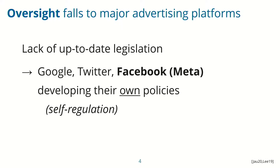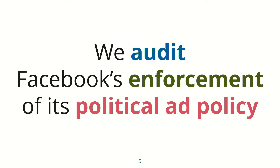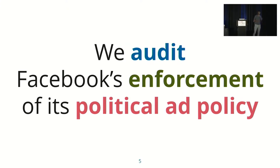This has meant that oversight on political ads largely falls to the major advertising platforms themselves — platforms such as Google, Twitter, or in our audit, Facebook, nowadays Meta. These platforms have developed their own policies for dealing with political ads in what's called a self-regulatory model. Facebook has one of the most extensive and comprehensive policies, and they're one of the largest platforms online. We audited whether their enforcement of their own self-developed political ad policy works well.